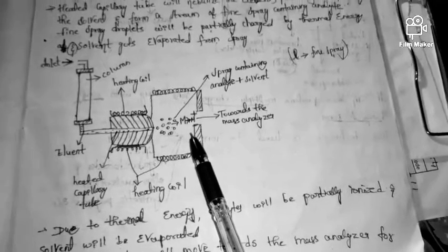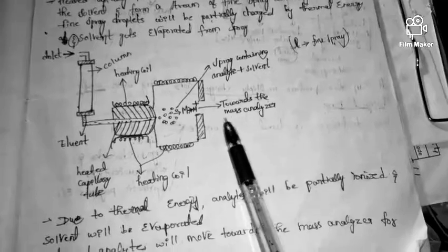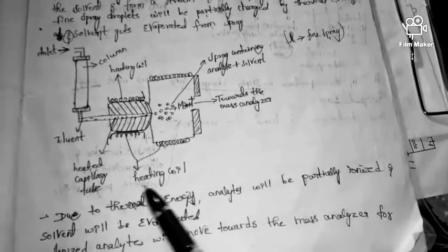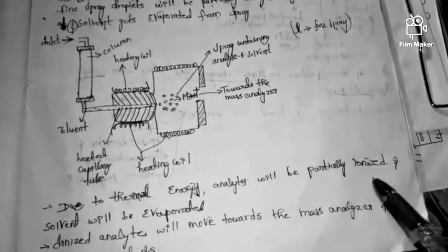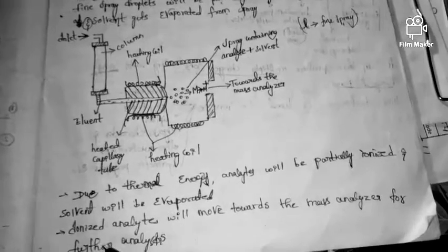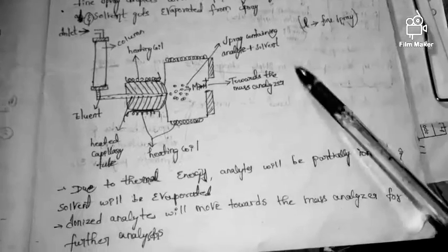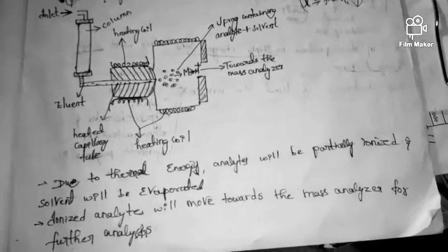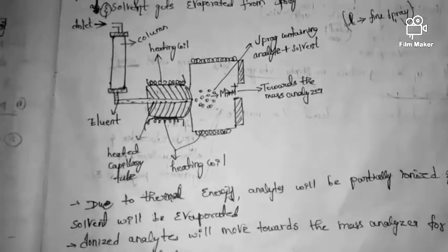The fine spray droplets will be partially ionized due to thermal energy. The solvent will evaporate, and these ionized analytes will then move towards the mass analyzer for further analysis. This is the brief overview of thermospray ionization.